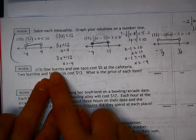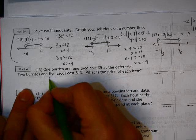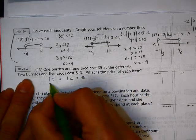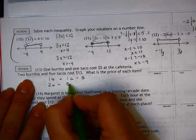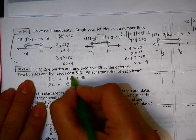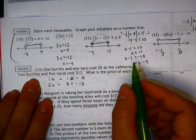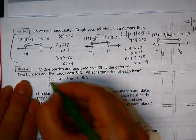Alright, let's check these out. So we have one burrito and one taco is $5 and two burritos and five tacos. I don't know why I put C for tacos, but that was exciting. It's equal to $13 and I need to eliminate something.